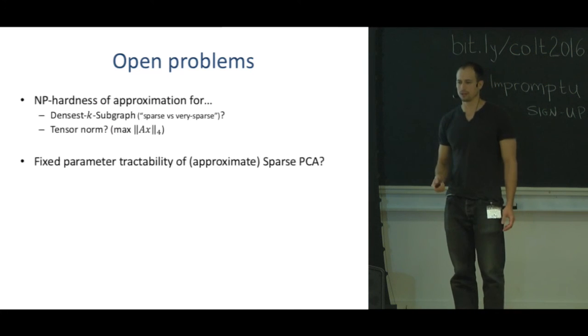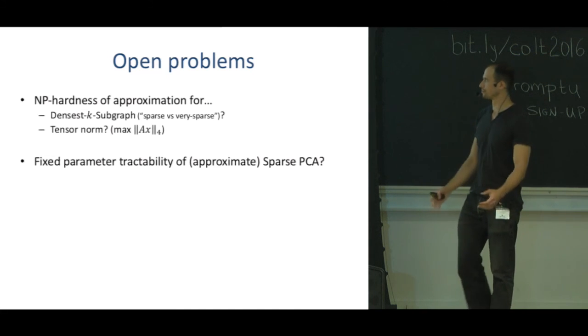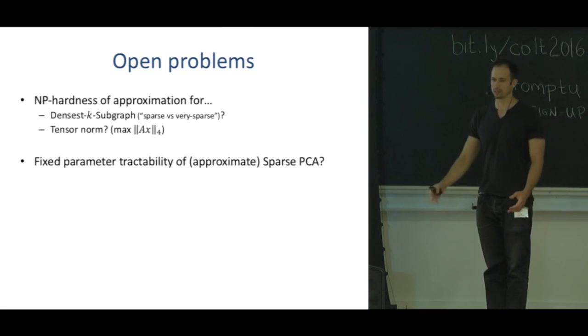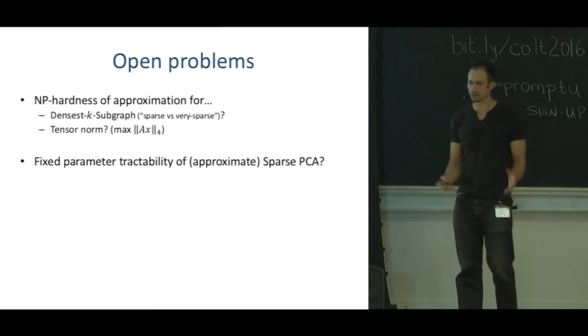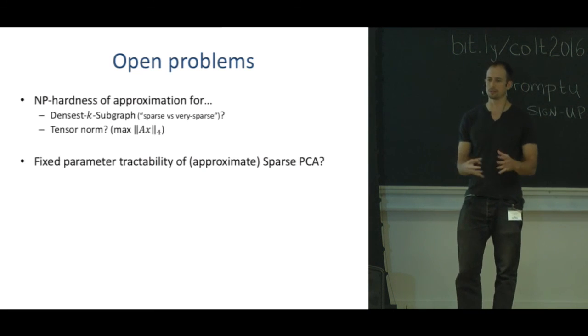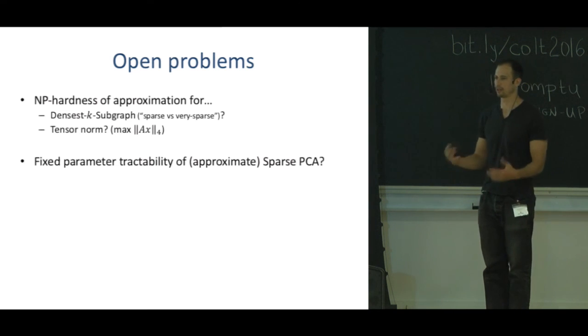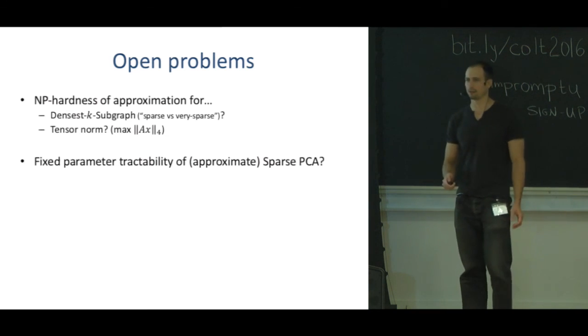I think it would be really interesting to get fixed parameter tractability of approximate sparse PCA because typically the k that we care about is really small. If you can get something that depends even exponentially on k but has a nice dependency on n, that would be nice.